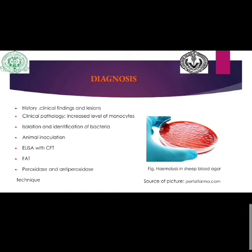For organism isolation, in the septicemic form, spleen and liver can be collected; in the encephalitic form, spinal fluid and punch medulla samples are taken; and in the abortion form, placenta, fetal contents, or uterine discharge are collected. Animal inoculation by intracerebral injection of infective brain material causes death in mice within two to three days. Serological tests include ELISA, CFT, fluorescent antibody test, and peroxidase anti-peroxidase technique for definitive diagnosis.